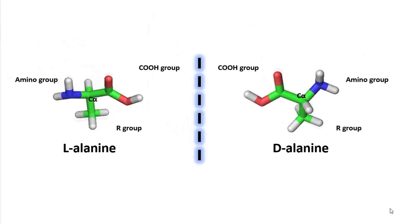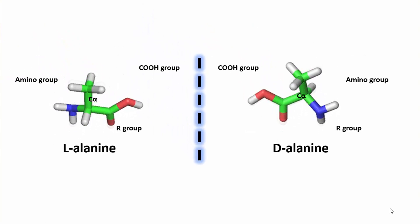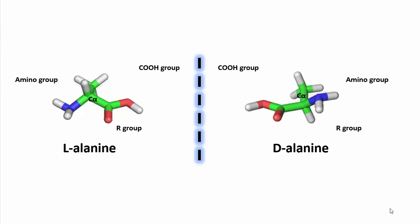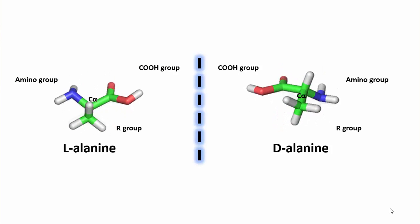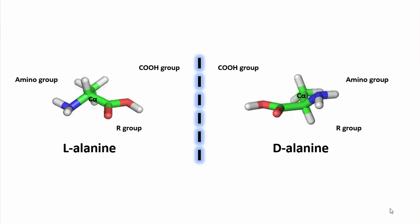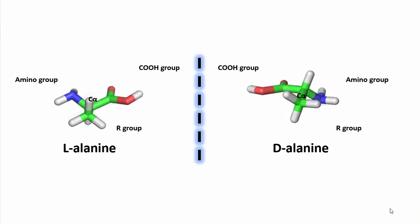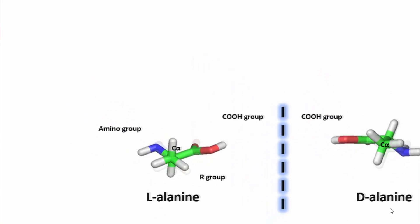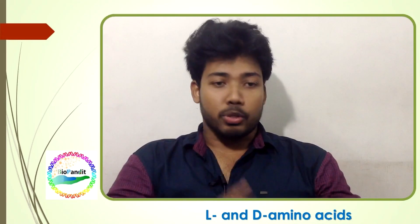Sterically, amino acids can have either L or D steric forms. These two forms are mirror symmetries, as you can see here. Non-biological processes do not distinguish between L and D variants, but biological processes do distinguish. The biological systems have a clear preference for L-amino acids over D-amino acids. This preference is called chiral selection.